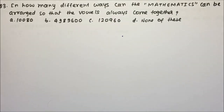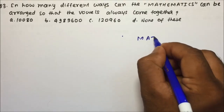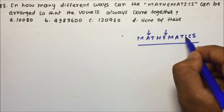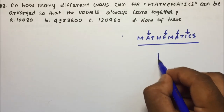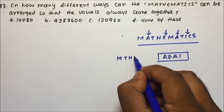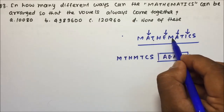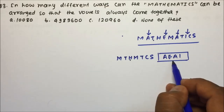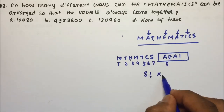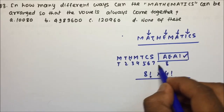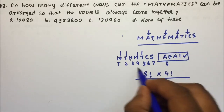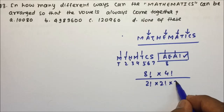Now question number 3: in how many different ways can the letters of the word MATHEMATICS be arranged so that all the vowels come together? The vowels are A, E, A, I — so 4 vowels. We put them inside a box. The consonants are M, T, H, M, T, C, S — that is 7 consonants. Together with the box that is 8 letters. Among the 8 letters, M is repeated 2 times and T is repeated 2 times. Among the 4 vowels, A is repeated 2 times. So the arrangement is: (8!/2!×2!) × (4!/2!).